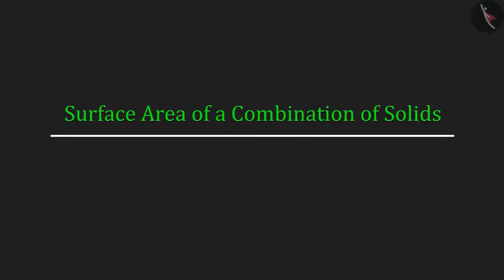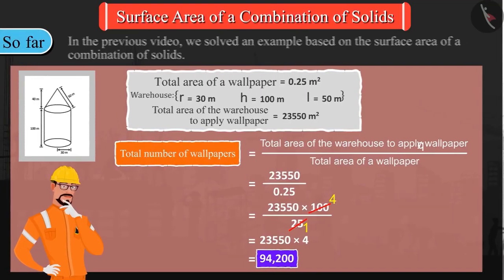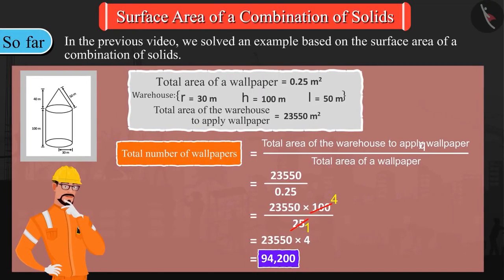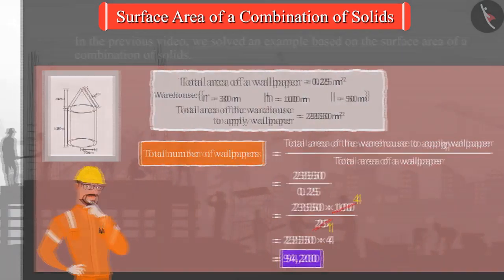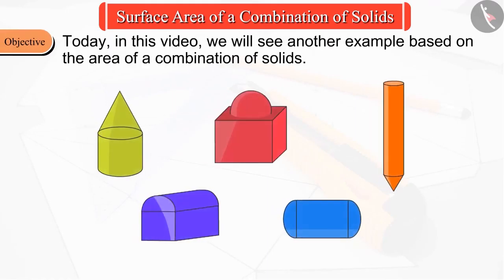Welcome to this video. In the previous video, we solved an example based on the surface area of a combination of solids. Today, we will see another example based on the area of a combination of solids.